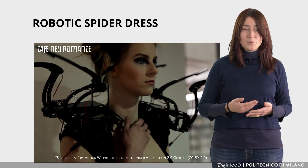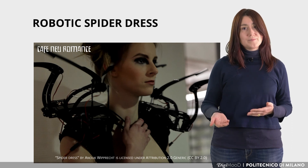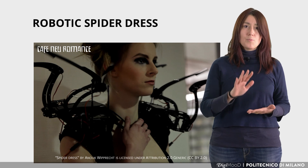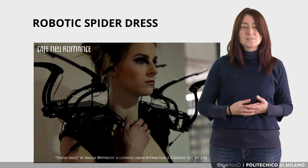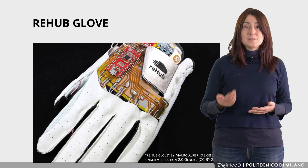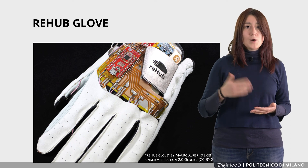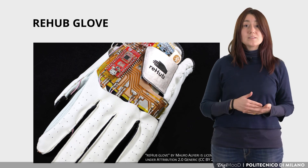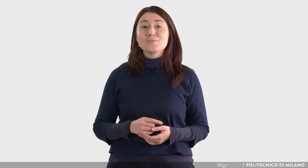An example of a performance wearable is the robotic spider dress, designed by Anouk Wiprecht, fashion tech designer. It has sensors that monitor how people approach the wearer and moves its mechanical limbs up to attack position when it finds it aggressive. Another example is RehabGlobe, a bottom-up project designed in a fab lab that monitors the movement of the hand. Mauri Alfieri, software programmer and maker, designed it to help physiotherapy patients recover faster. So, we are living in a connected world, from our smartphone to our IoT home system — but are we ready to have smart garments in our life?